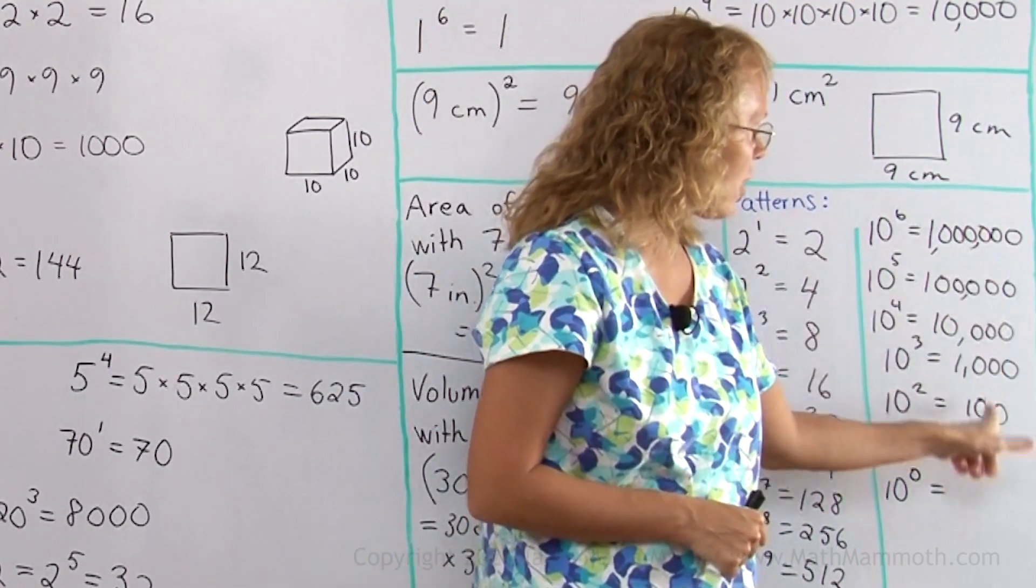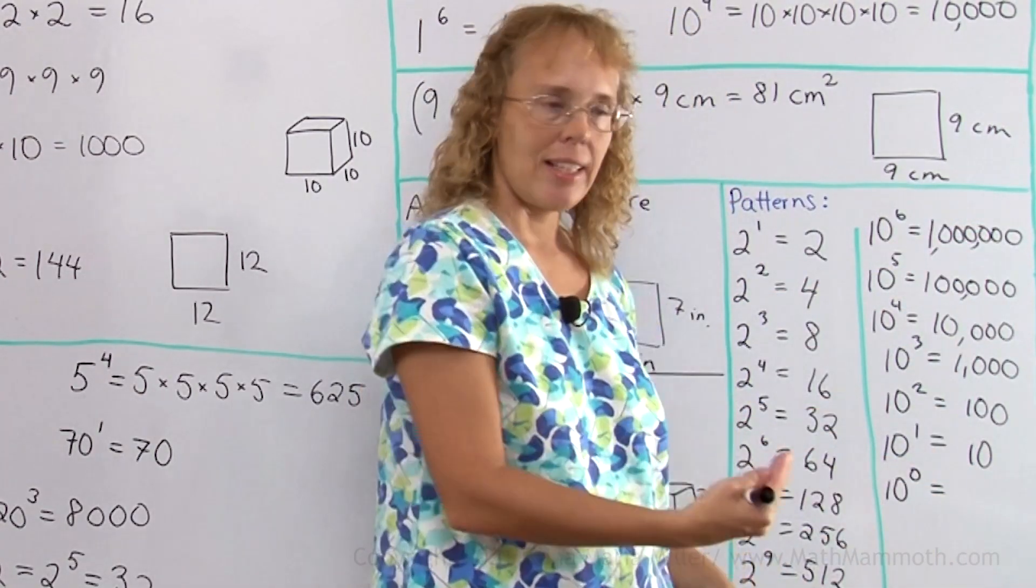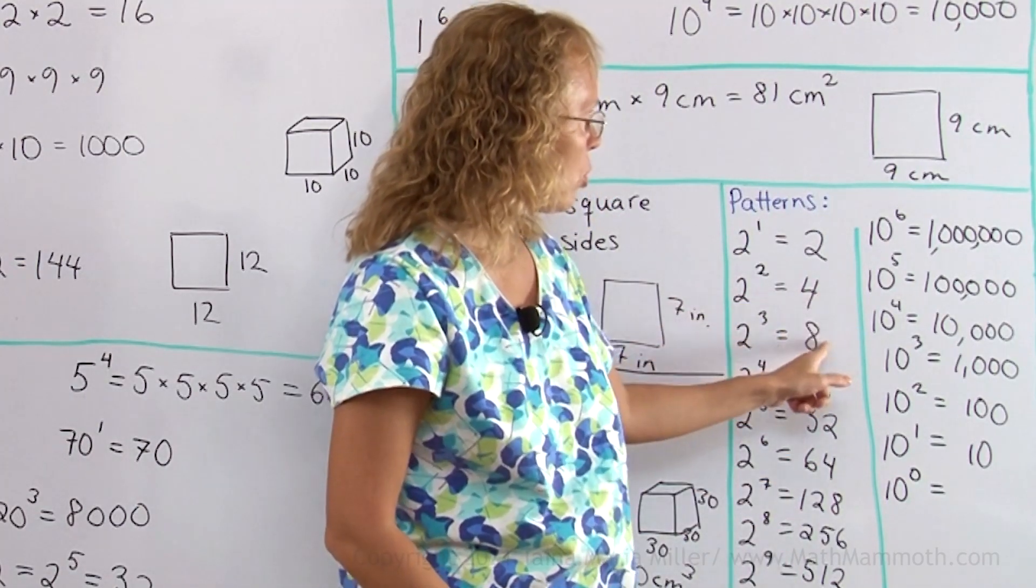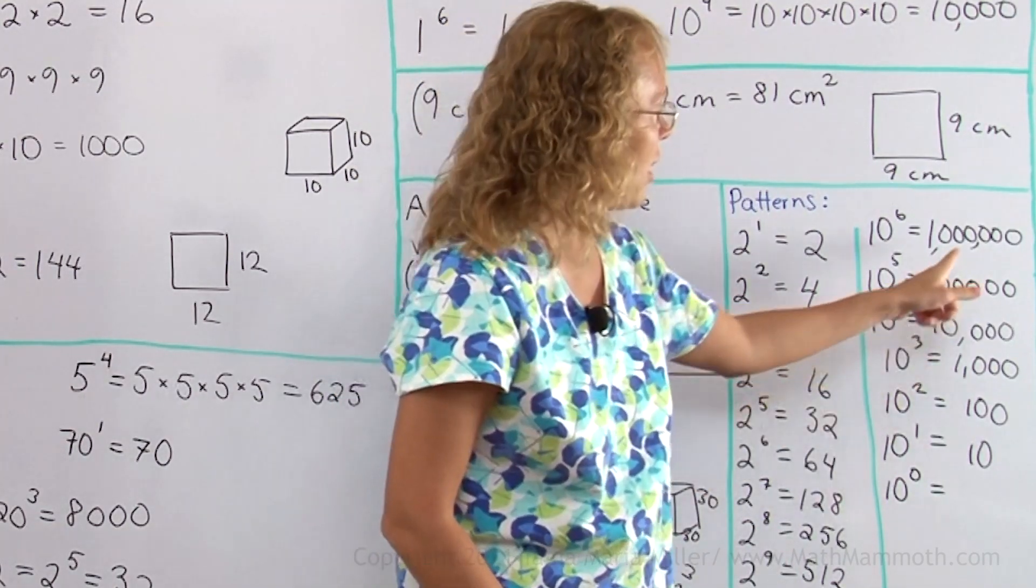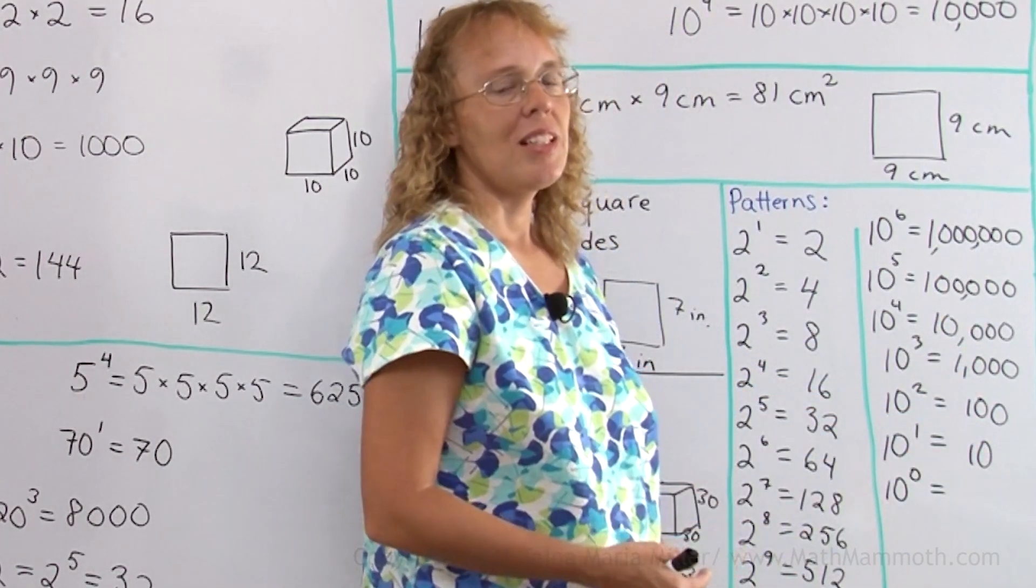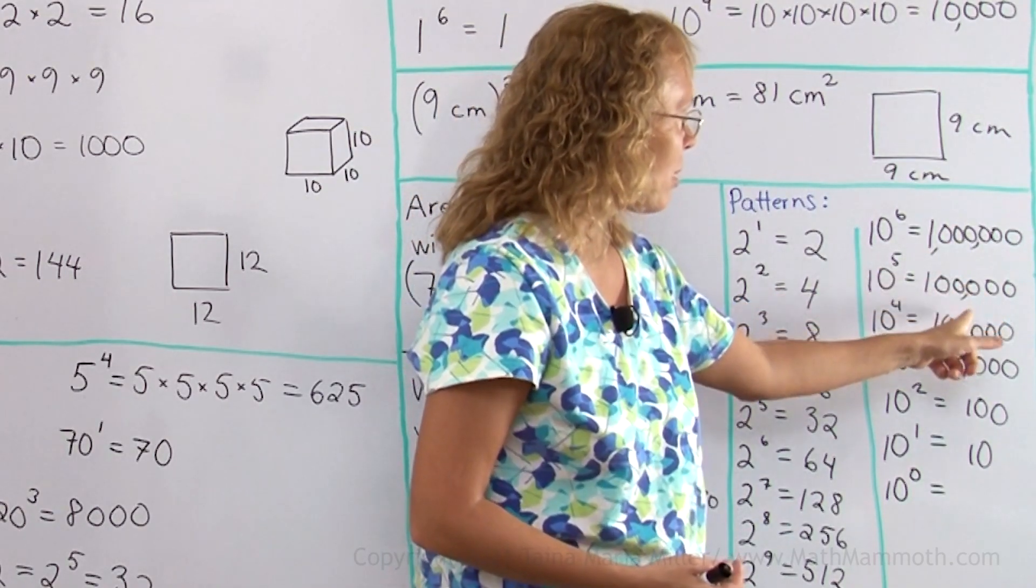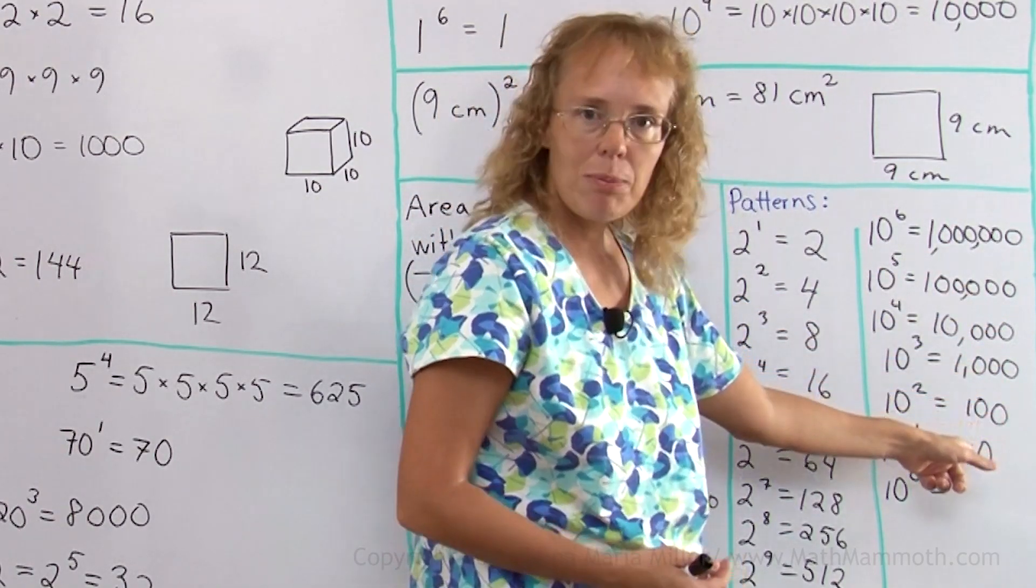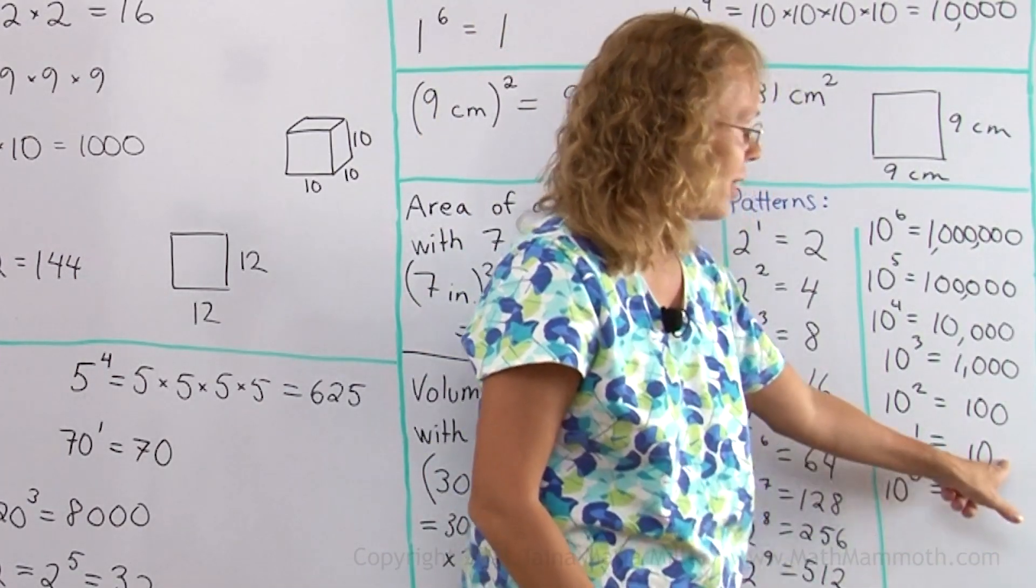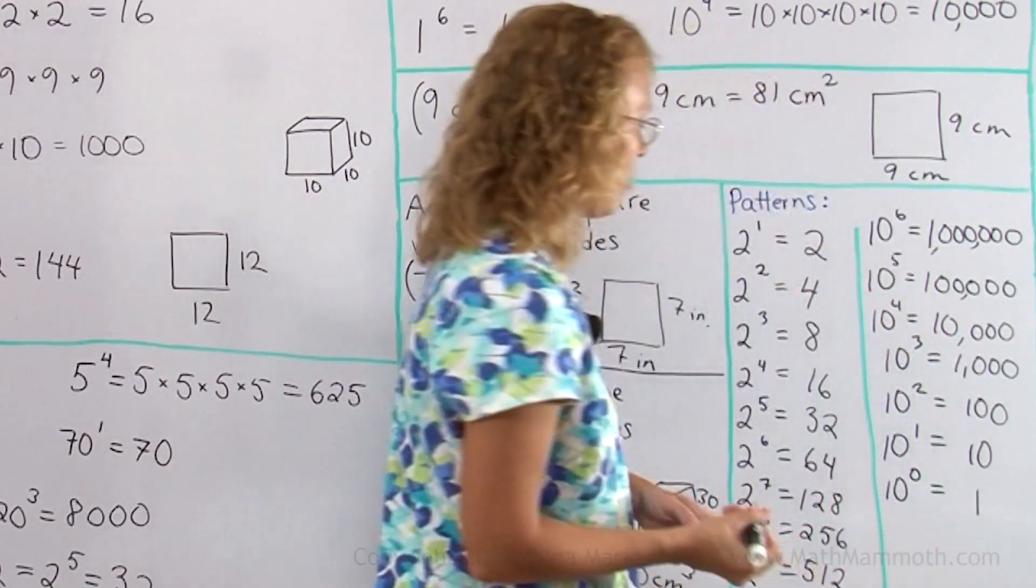If I look at this pattern of numbers, then in each step when I'm going down, I divide by 10. Just like here, when I went this way, I was multiplying by 2 in each step. Here I am, instead of multiplying, I'm dividing. And instead of 2, I do it by 10 because this base number is 10. Divide by 10, divide by 10. You see, in each step I divide by 10. So logically speaking, if I take the next step, 10 divided by 10 gives me 1 here for 10 to the zeroth power.